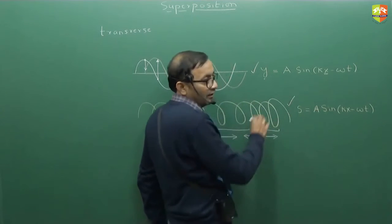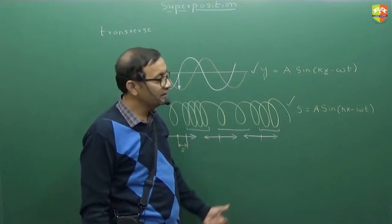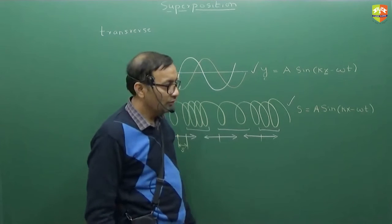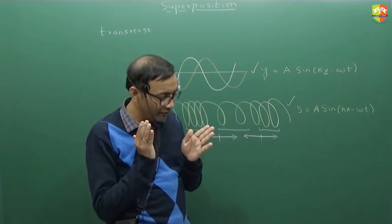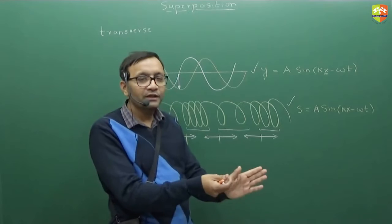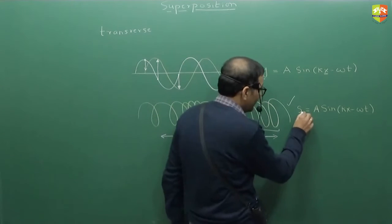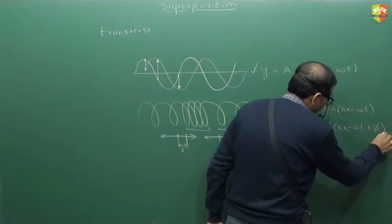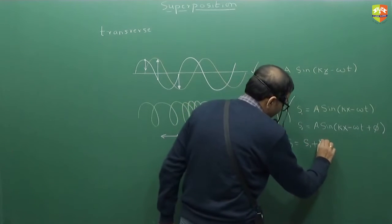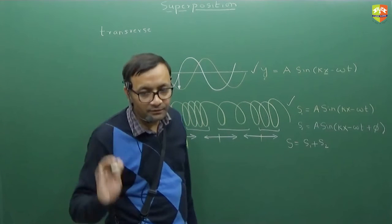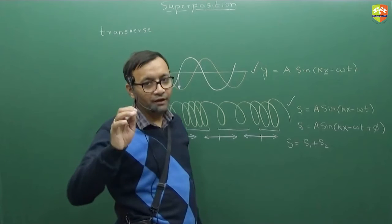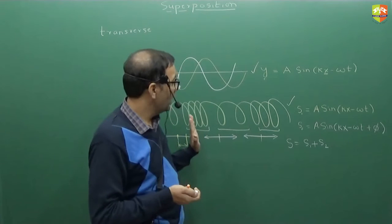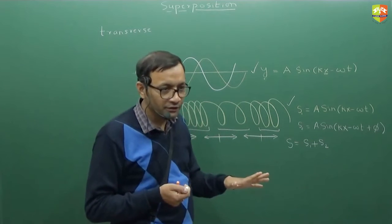What is the difference between the longitudinal and transverse wave equations? The right-hand side is identical; only the left-hand side differs — and even then, philosophically it is the same thing: displacement from mean position. So when two longitudinal waves travelling in the same direction superpose, S1 = a sin(kx − ωt) and S2 = a sin(kx − ωt + φ), and adding them gives the exact same result: amplitude 2a cos(φ/2). We don't need to worry separately about how longitudinal waves superpose when travelling in the same direction.